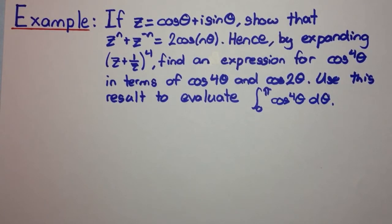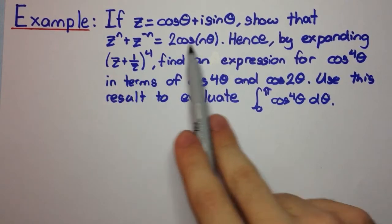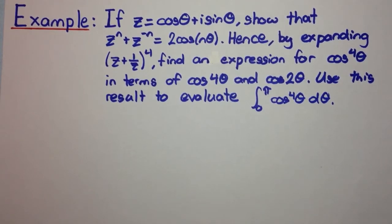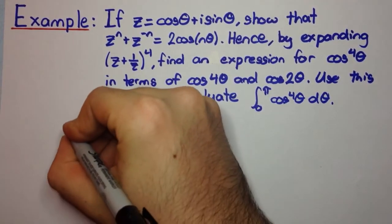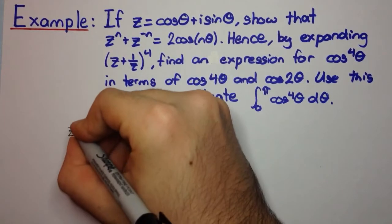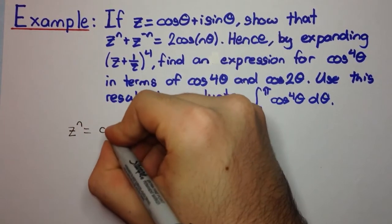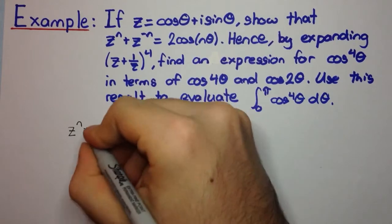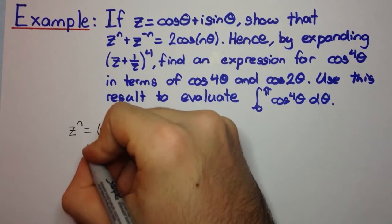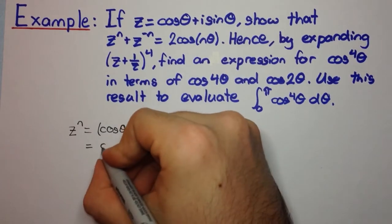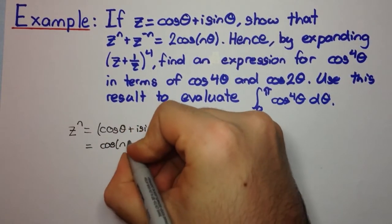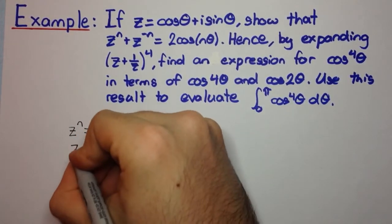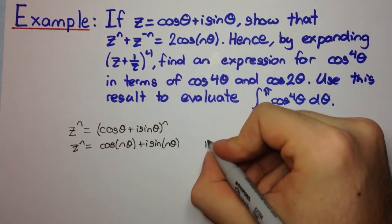The first part requires us to show this proof. So we have z^n, which is (cos θ + i sin θ)^n. By De Moivre's theorem, that equals cos(nθ) + i sin(nθ). We can call this equation 1.